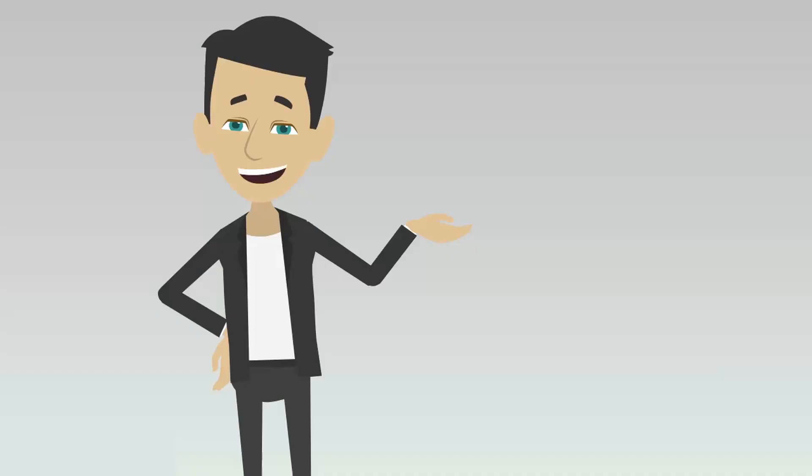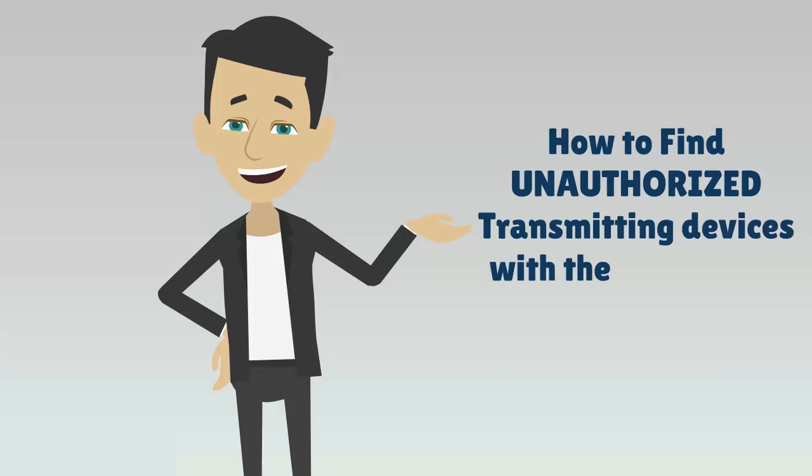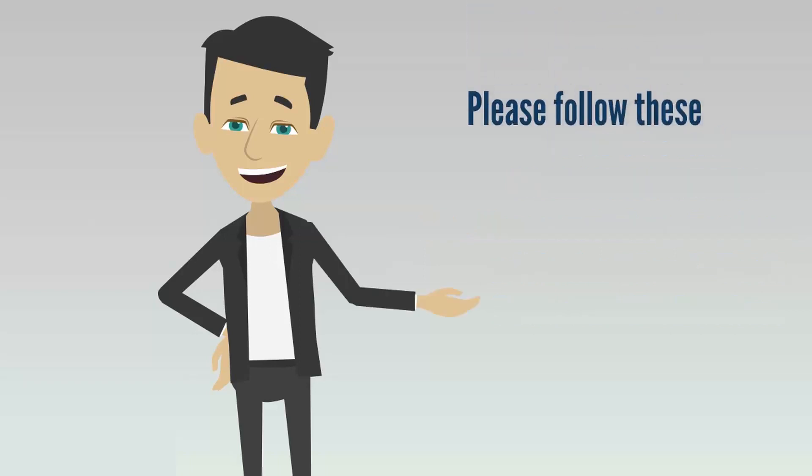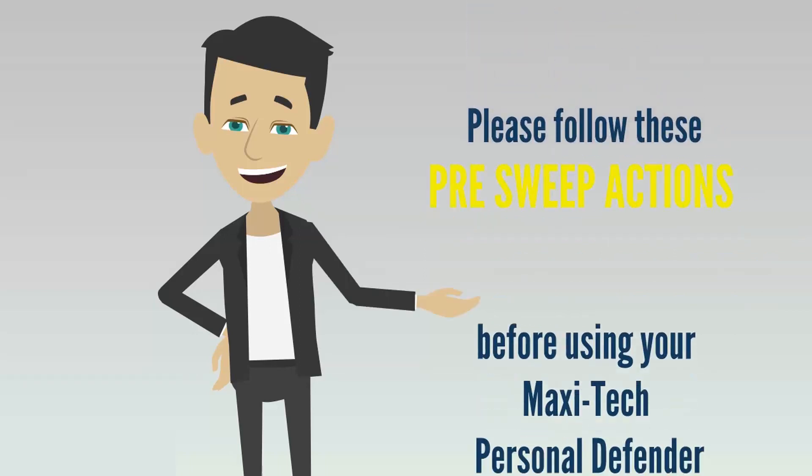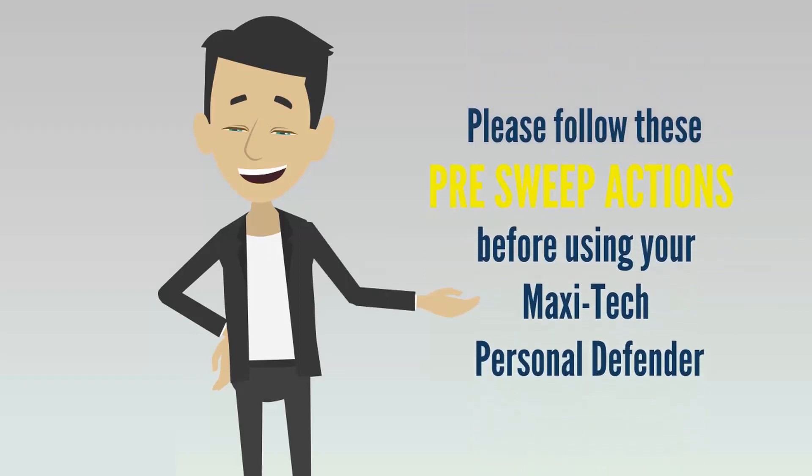Okay, let's begin. First, let's see how to find unauthorized transmitting devices that may be hiding in office, home or area of concern. Before using your device, the following pre-sweep actions are required. Please turn off the following electronic devices.